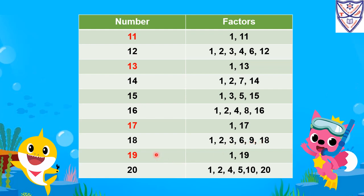For 19: 1×19=19 and 19×1=19. So the factors of 19 are 1 and 19. For 20: 1×20=20, 2×10=20, 4×5=20, 5×4=20, 10×2=20, 20×1=20. So the factors of 20 are 1, 2, 4, 5, 10, and 20.